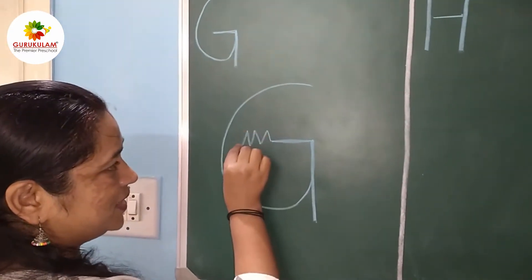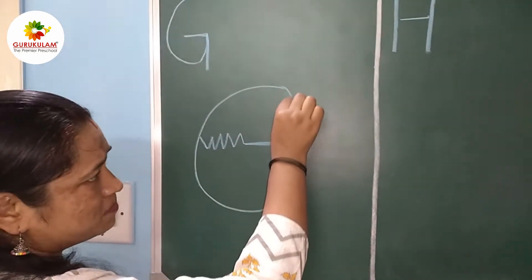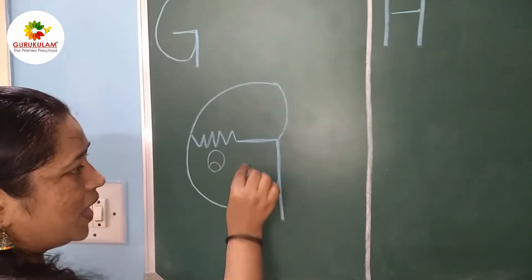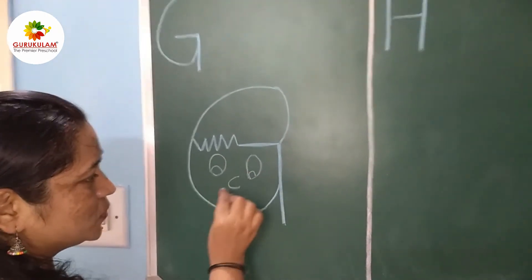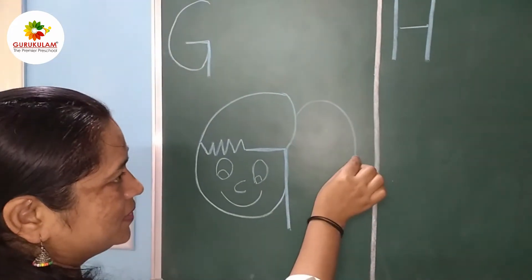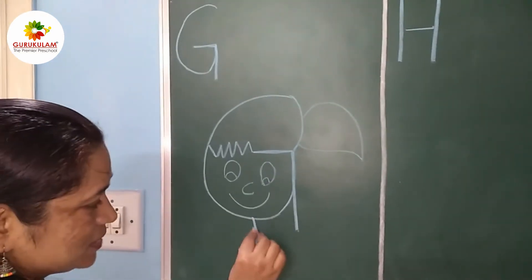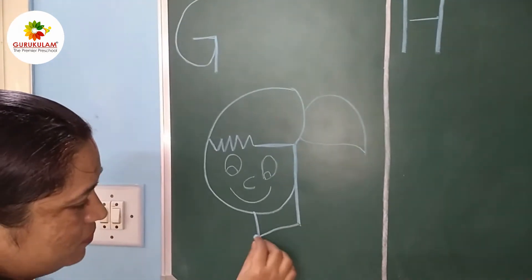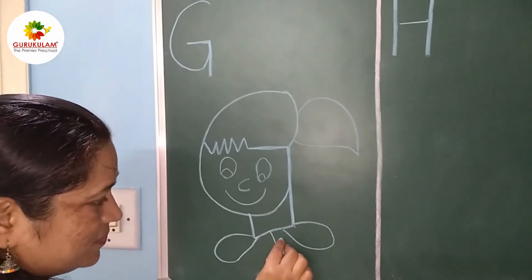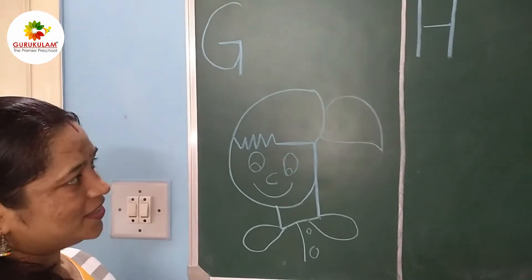A zig zag. Then join this part to here. The two eyes, nose and a smiley mouth. And here a curve. On this part join. Like this.